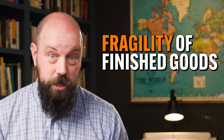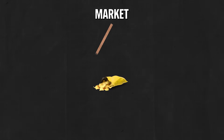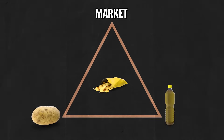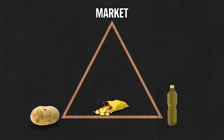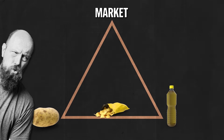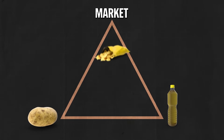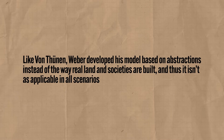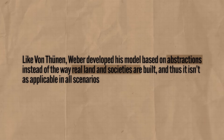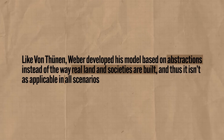Yet another factor that determines factory placement is the fragility of finished goods. For example, think of a potato chip — potatoes are heavier than a bag of chips, so according to least cost theory, a chip factory would locate closer to the raw materials. But chip manufacturers know nobody wants a bag full of crumbly chips, so they locate closer to the market instead. Like any model in this course, least cost theory has its limitations — Weber developed it based on abstractions rather than how real land and societies are built, so it isn't applicable in all scenarios.